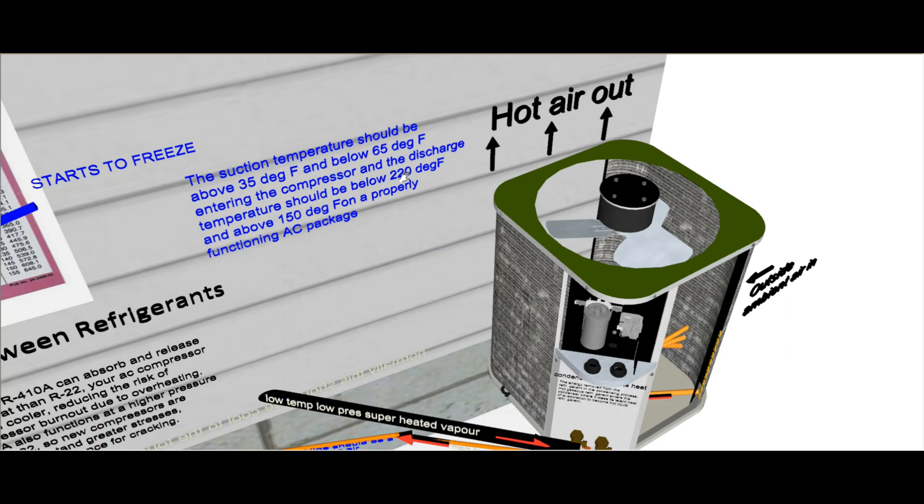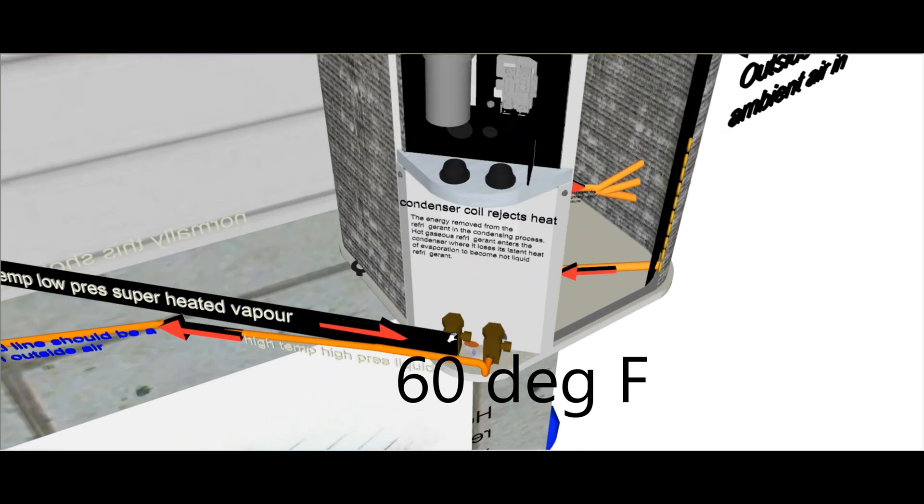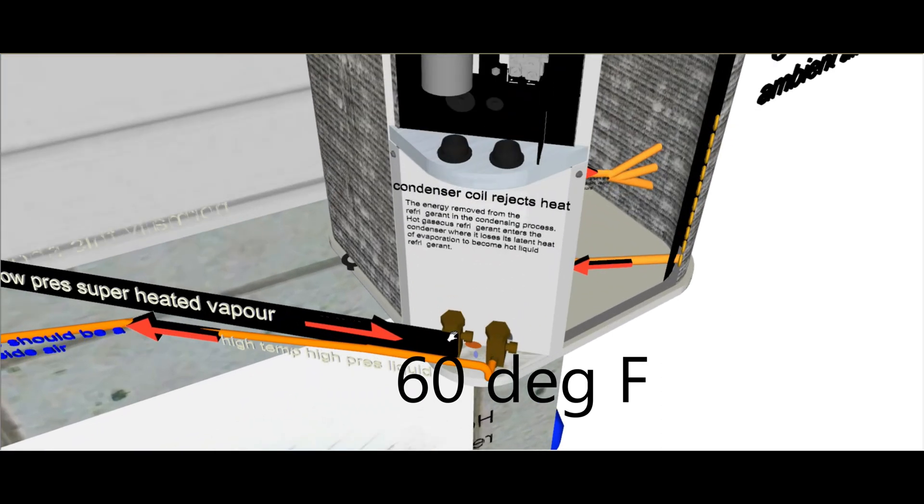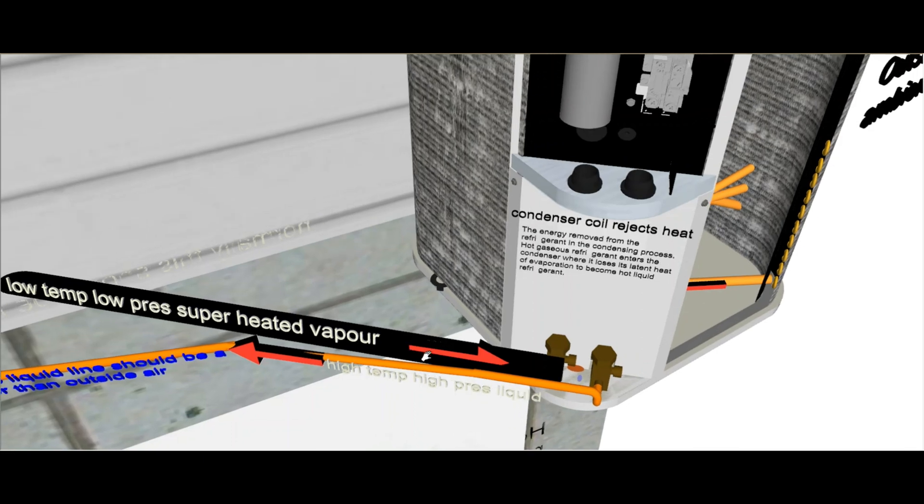The suction temperature should be above 35 degrees Fahrenheit and below 65 degrees Fahrenheit. So typically this one will be about 60 degrees, maybe lower but around 60 degrees. So it's cool to the touch if you touch it, even though it's a vapor, because this refrigerant has a lower boiling point, so that's why it's good for manipulating temperature and pressure. So only 60 degrees Fahrenheit coming in, we still call that a superheated vapor even though it's low temperature and low pressure.